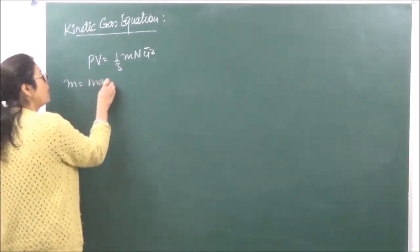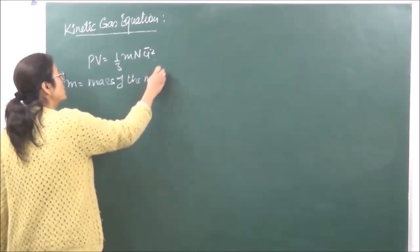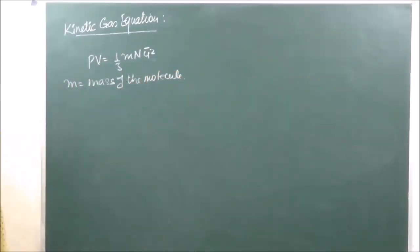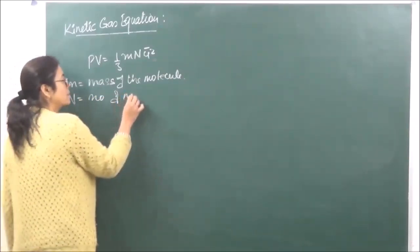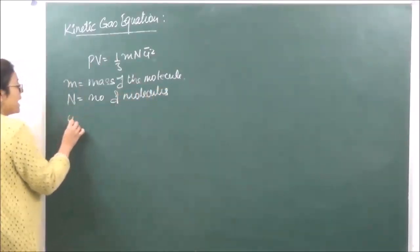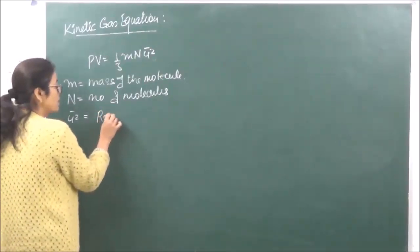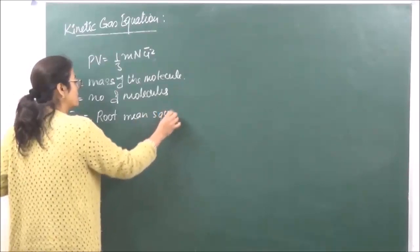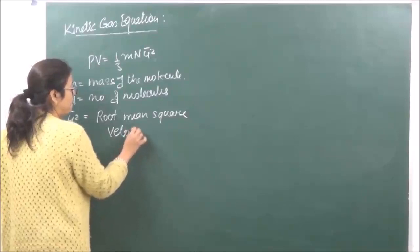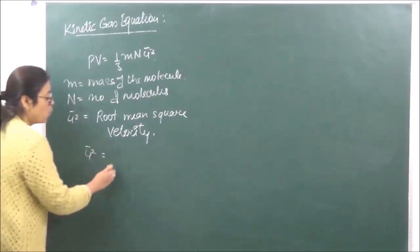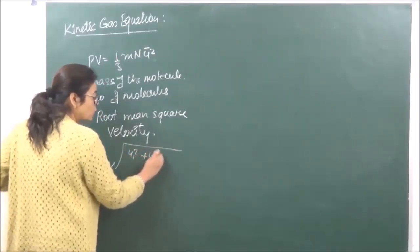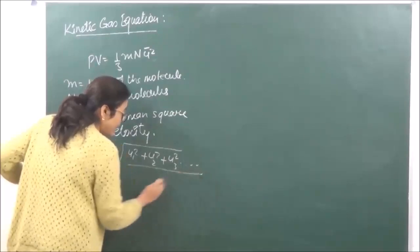According to this, m is equal to the mass of the molecule. V is the volume of the gas. P is the pressure of the gas. N is the number of molecules present. And u² is the root mean square velocity, given as u² = √(u₁² + u₂² + u₃²) divided by N. This is the root mean square velocity.